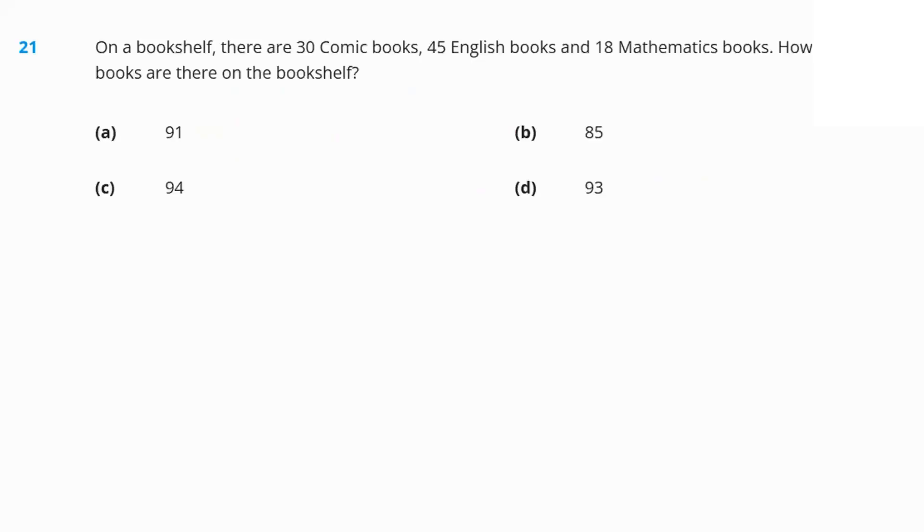Next, question number 21. On a bookshelf, 30 comic books, 45 English books and 18 math books are there. How many total number of books? Simply add all of them. That gives you eight plus five, 13. Three carry one. Three plus four is seven plus one. Eight plus one, nine. 93. Option D is the answer.